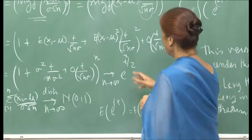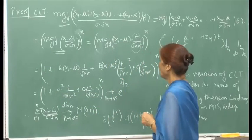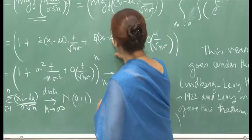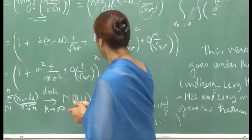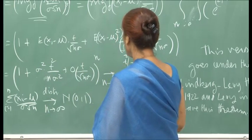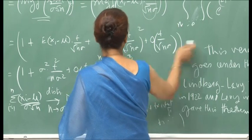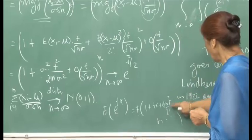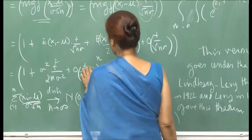Since E[x1 - mu] = 0 (each x_i has mean mu), that first-order term vanishes. The second-order term gives E[(x1-mu)^2] = sigma^2. So the expression becomes: 1 + sigma^2 * t^2 / (2 * n * sigma^2) + higher order terms, raised to the power n. The higher order terms are of order t^r/(n^{r/2}) for r >= 3, and as n goes to infinity these go to zero.